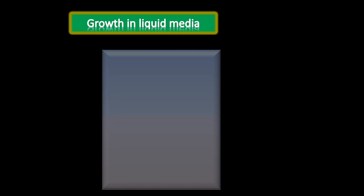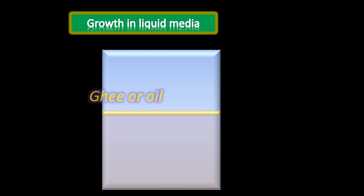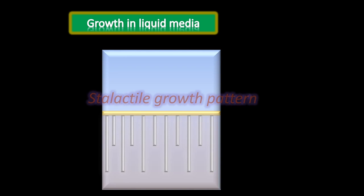Growth in liquid media: when Yersinia pestis is grown in a flask containing liquid medium with a layer of oil on top, a characteristic growth occurs where growth hangs down from the surface into the broth. This growth pattern is called a stalactite growth pattern, and such a broth is called ghee broth.